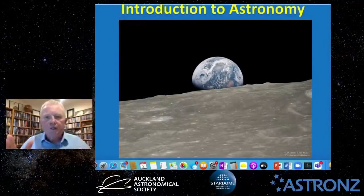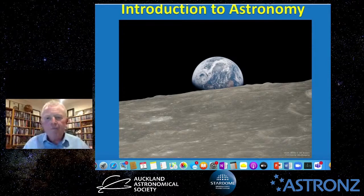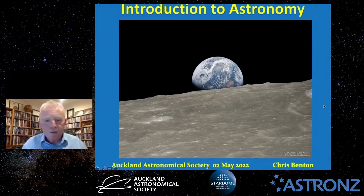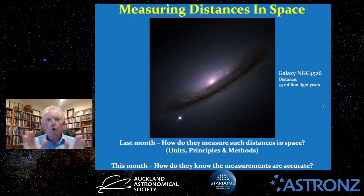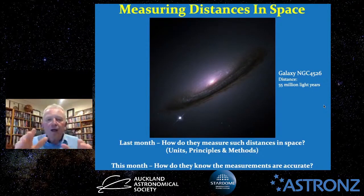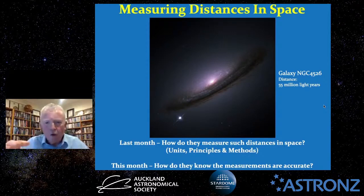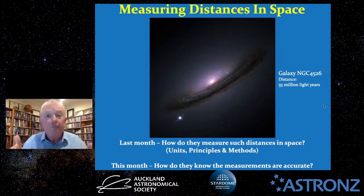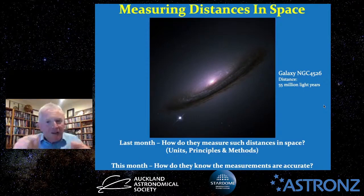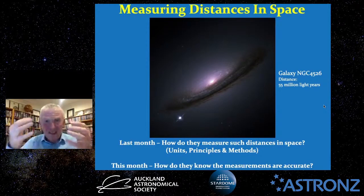Welcome to Introduction to Astronomy for May 2022. My name is Chris Benton and tonight we're talking about measuring distances in space. Last month I showed you this absolutely gorgeous, stunning picture of this lovely spiral galaxy, NGC 4526, quoted at being 55 million light years away. We asked the question: how do they measure such distances in space?